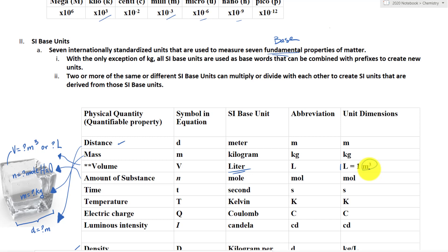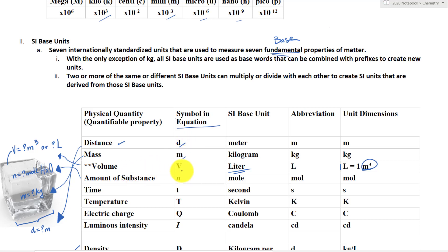To understand the power of the base units, we must memorize the basic information. These units are used in equations to solve for specific properties of matter. For distance, the symbol is lowercase d; mass is lowercase m; volume is capital V; mole is lowercase n; time is lowercase t; temperature is capital T; charge is capital Q; and luminous intensity is capital I.